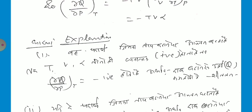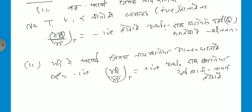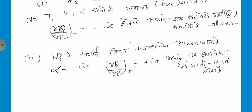अब इसका expression देखते हैं। यदि वो पदार्थ जिसका ताब बढ़ाने पर आयतन बढ़ता है, उसमें T, V, और alpha सभी positive हैं, तो del Q by del P negative हो जाएगा — अर्थात दाब बढ़ाने पर ऊर्जा में कमी होगी, यानी शीतलन होगा। इसका उल्टा, जिन पदार्थों में ताब बढ़ाने पर आयतन घटता है, alpha negative हो जाता है, तो del Q by del P positive होगा — ताब बढ़ाने से ऊर्जा बढ़ती है, यानी तापन का फार्मूला लागू होता है।